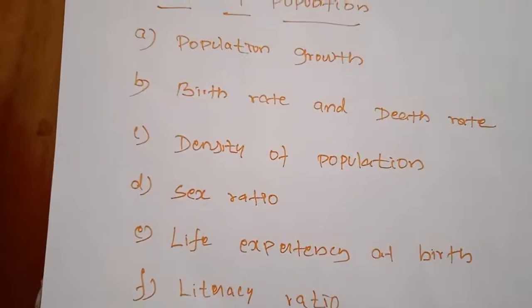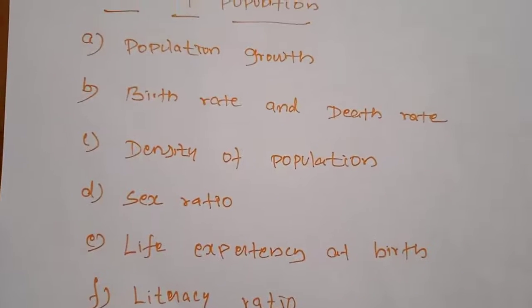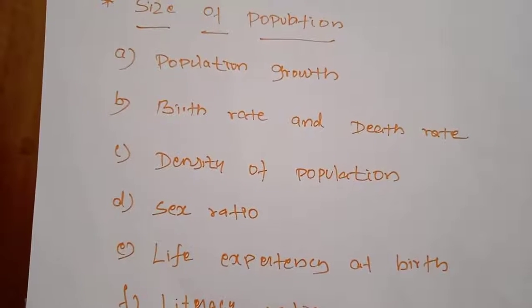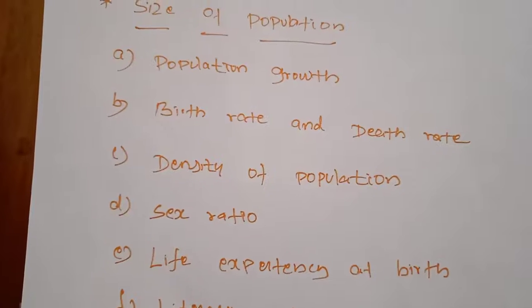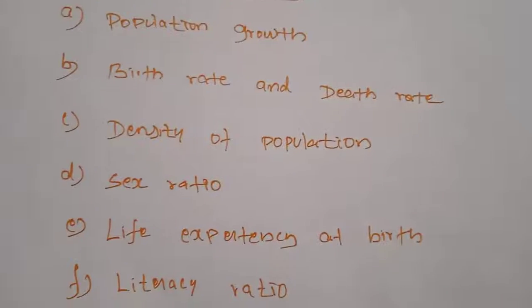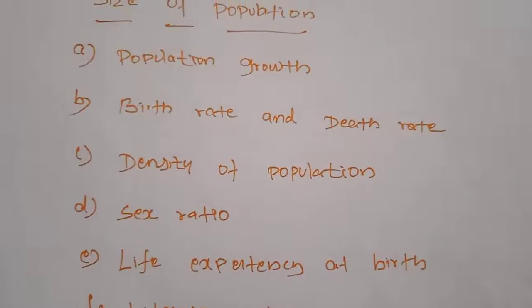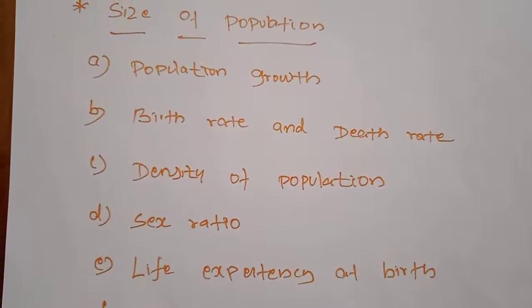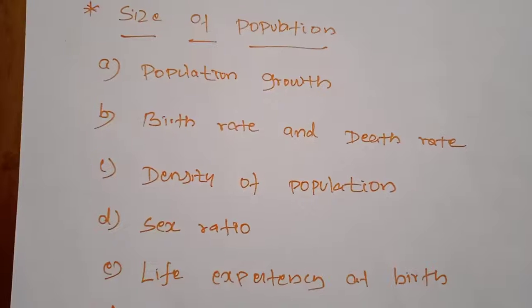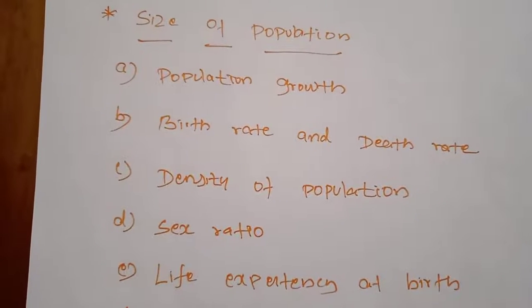Sex ratio refers to the number of females per thousand males. It is an important indicator to measure the extent of prevailing equity between males and females at a given point of time. The sex ratio in India is more favorable to males than to females. In Kerala, the adult sex ratio is 1,084 as of 2001. The recent census shows a marginal increase in sex ratio.